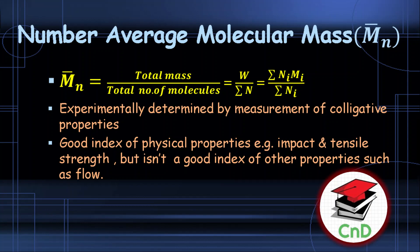Experimentally, the number average molecular mass is calculated using colligative properties such as elevation in boiling point, lowering in freezing point, and osmotic pressure. The number average molecular mass is a good index for physical properties like impact and tensile strength, but it is not a good index for other properties such as flow at high molecular mass.